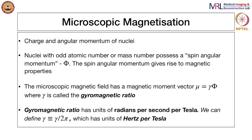Each nucleus with odd atomic number or mass number possesses something called spin angular momentum, which we denote by phi. The spin angular momentum gives rise to magnetic properties — that is the one that interacts with external magnetic fields. The microscopic magnetic field has a magnetic moment associated with it, and that moment vector we denote by mu, which is gamma times phi. This gamma is known as the gyromagnetic ratio and it can be measured for different types of nuclei.